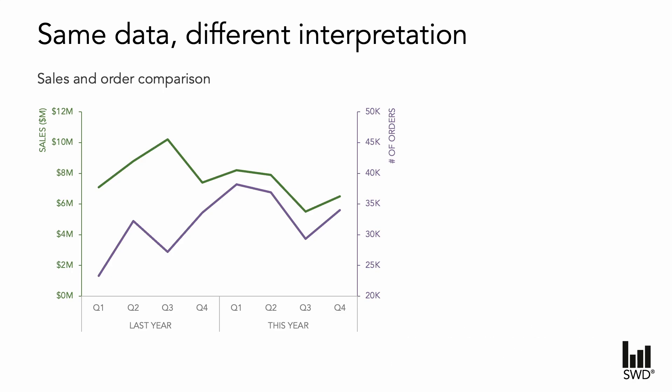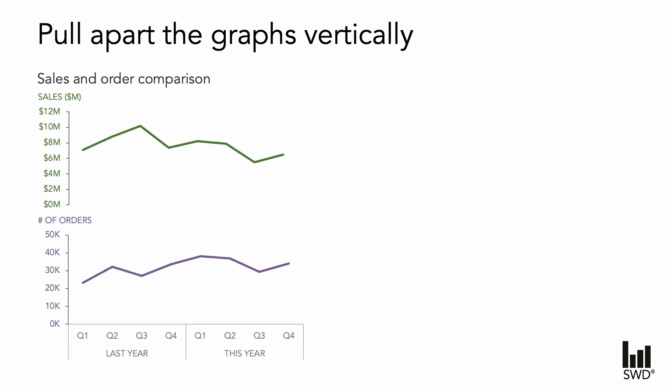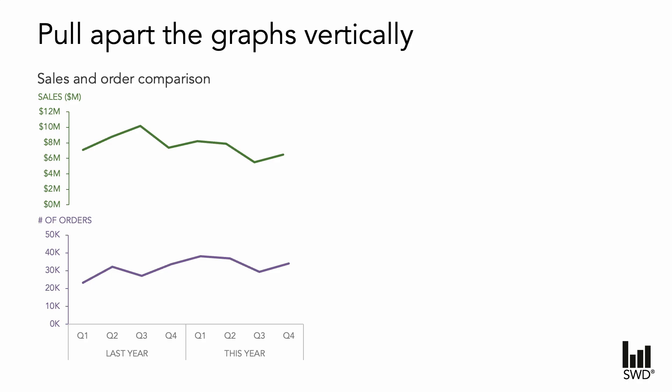If we admit defeat of using these charts, what alternatives do we have to move forward? The first suggestion is a simple one — pull the two elements out into their own separate graphs. We can share the horizontal axis to save on repetition, but now each line has its own axis and we don't face the same difficulties as previously.